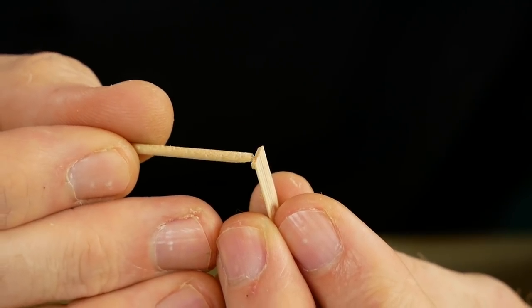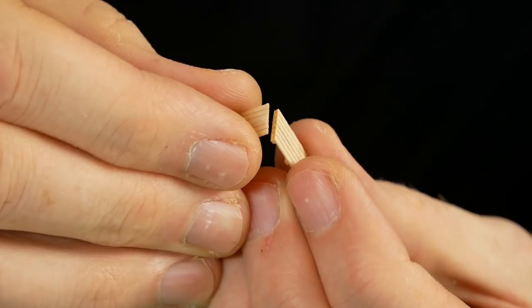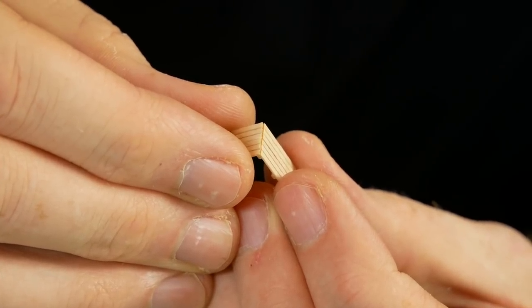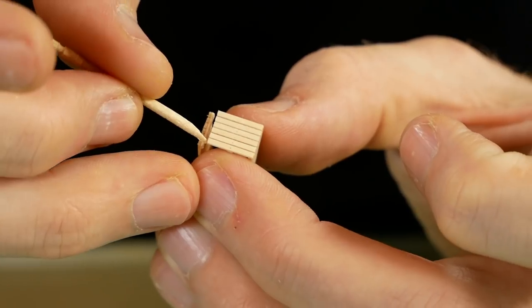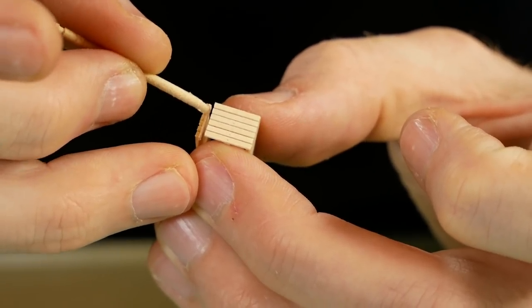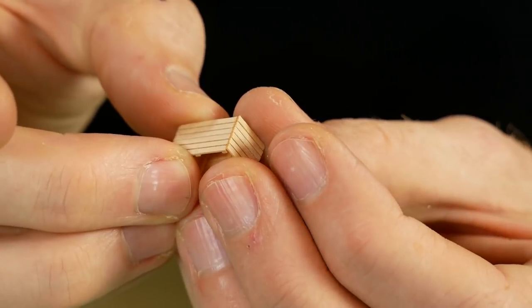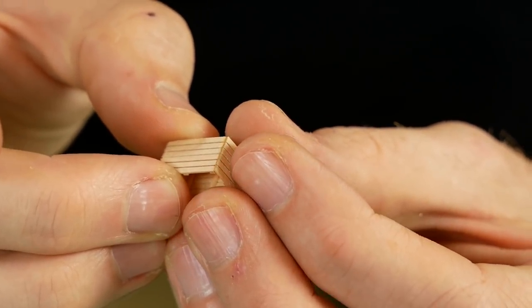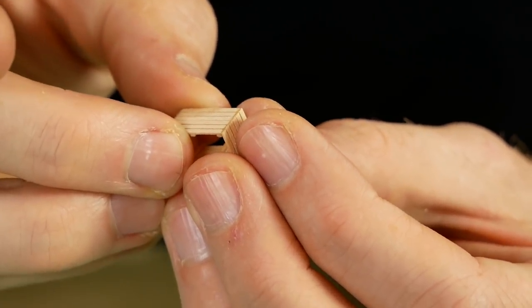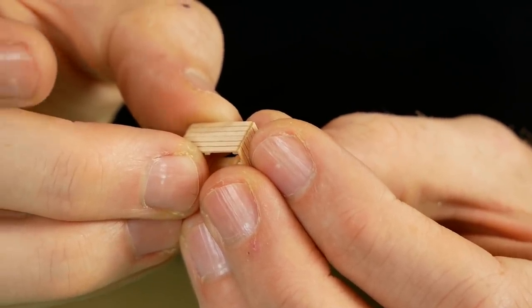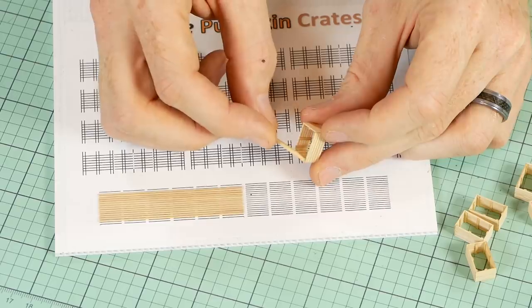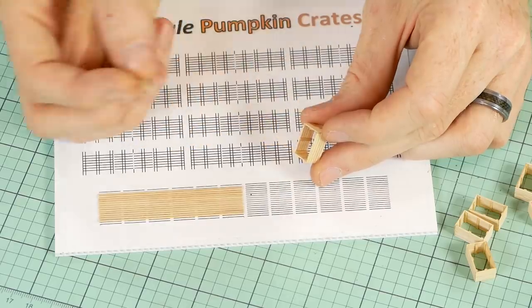The crate sides are then assembled carefully using super glue. It can be quite fiddly and if you're having trouble you can brace your hands on the table to help. Next it's just a matter of gluing the crates to the base planks.